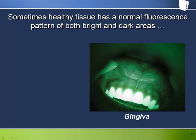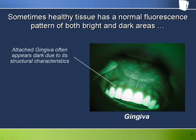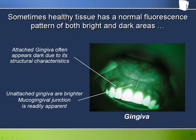Some oral mucosa appear homogeneously dark under Velscope due to their structural characteristics. A good example is the attached gingiva, which while having a typically light pink appearance in white light, appears dark under Velscope. The unattached gingiva immediately adjacent to the attached gingiva have a brighter appearance, more typical of other mucosal tissues, making the mucogingival junction readily apparent under Velscope. The theme of symmetry and bilateral presentation is again evident here — this principle is one of the keys to helping us decide what belongs and what doesn't.